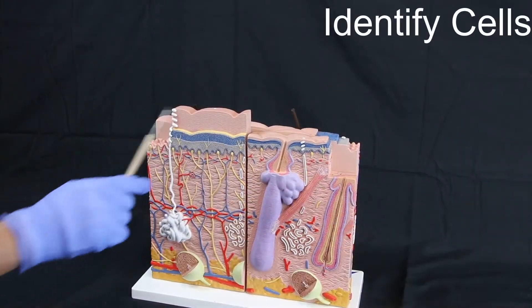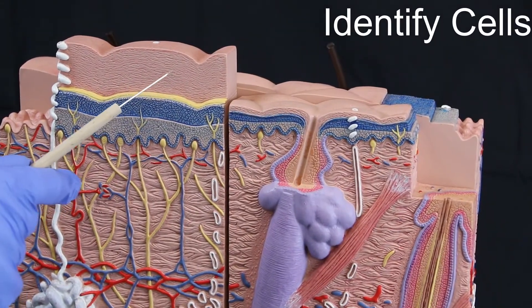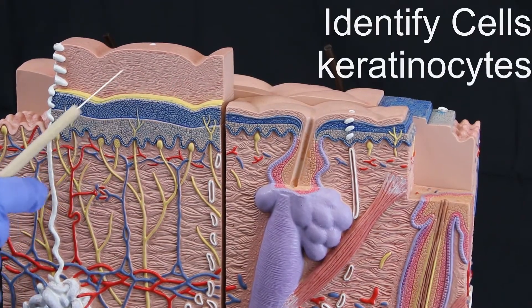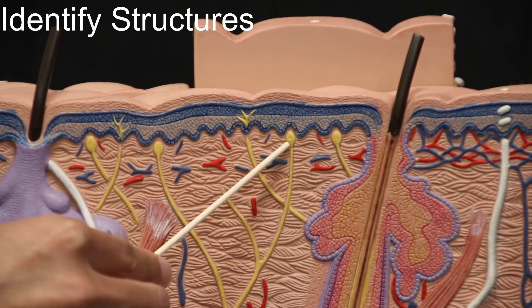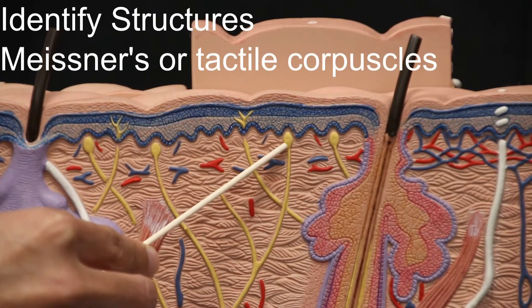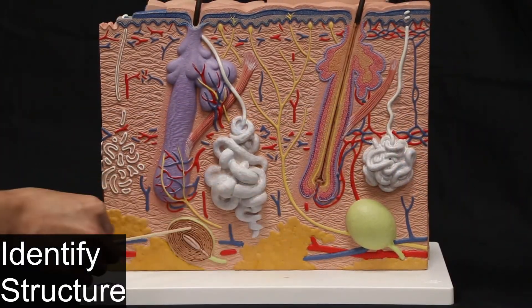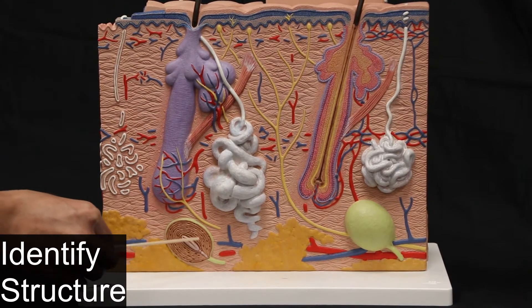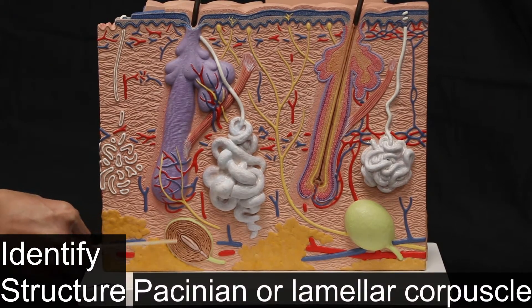ID cells. Adipocytes. ID structures. Meissner's or tactile corpuscles. ID structure. Pacinian or lamellar corpuscle.